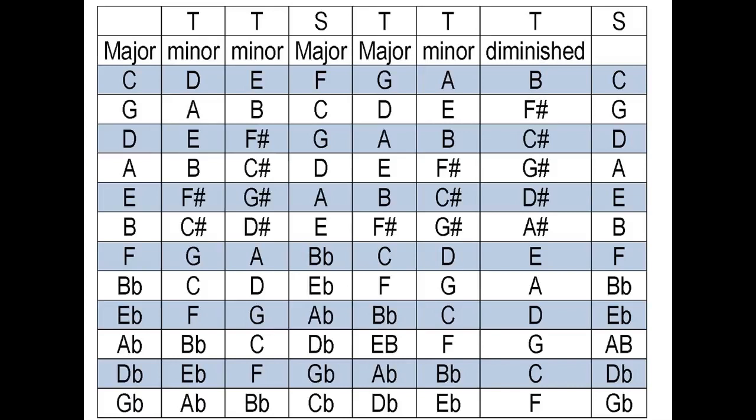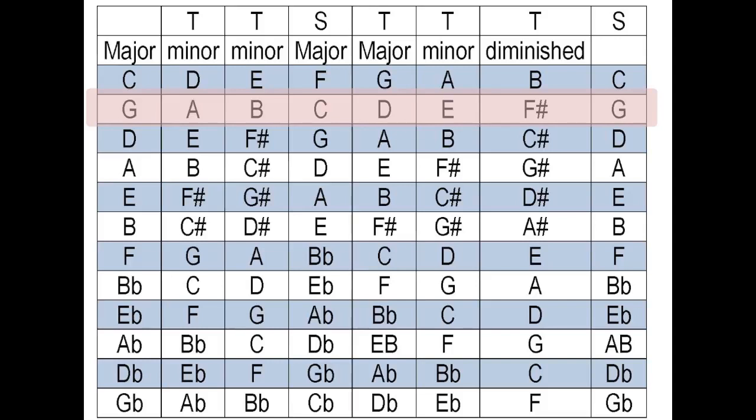Now, let's say you want to figure out what key your song is in and you have no idea. You've always played these chords but don't know the key. Think of the chords in your song — let's say G, C, and D. Look across your second row and find the three majors: first column, fourth column, and fifth column. Scan down those major columns and find what key has G, C, and D in it. It's the second one — the G major scale.